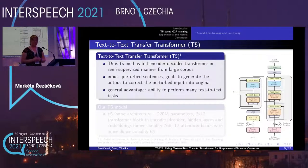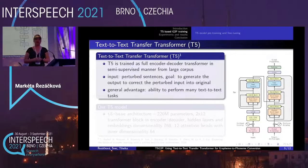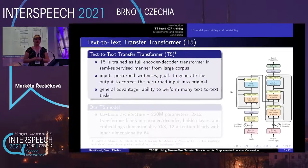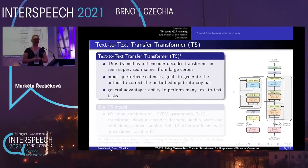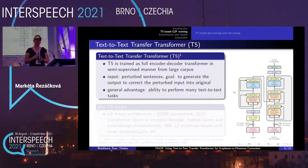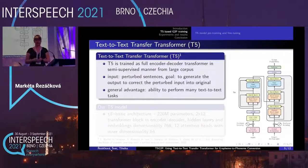To train our sentence-level G2P model, we used the text-to-text transfer transformer architecture called T5. T5 is a quite novel approach, presented one or two years ago. It is trained as a full encoder-decoder transformer in a semi-supervised manner from a huge corpus. As input, there are perturbed sentences, and the goal is to learn to reconstruct the original.